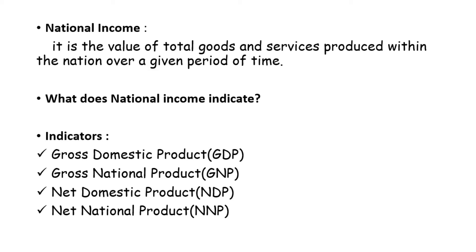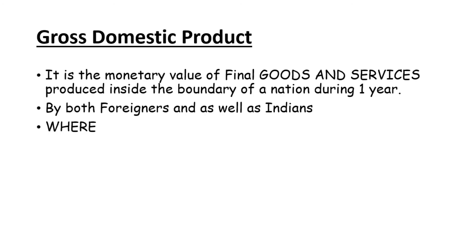Now, we measure national income through different indicators. Majorly there are four: Gross Domestic Product (GDP), Gross National Product (GNP), Net Domestic Product (NDP), and Net National Product (NNP). Let's discuss each of these now. First, Gross Domestic Product, or simply GDP.